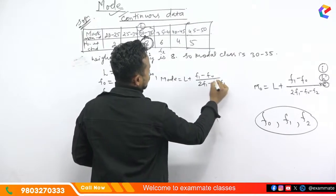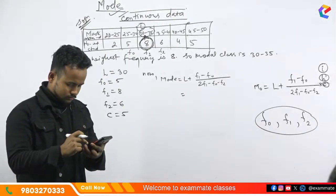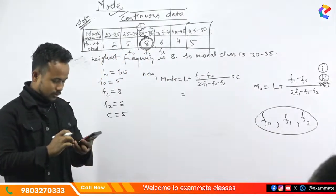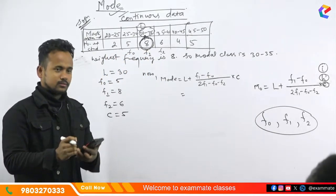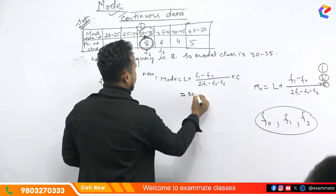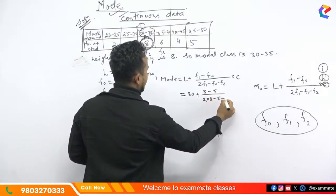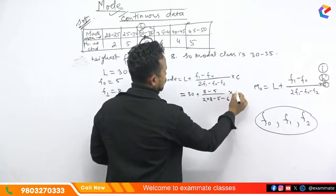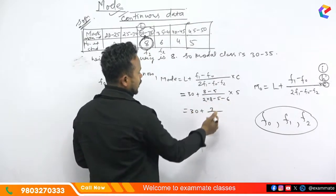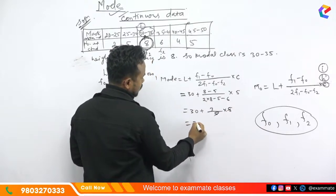Common difference — what is it? Minus 2. If you have to write the answer: H is 0, C is this. 33. Right answer. L is 30. F1 value is 8. 5. 2 into 8 minus 6, into 5. Now 30 plus 3. 11 minus 11 is 11 minus 11 is 5, into 5. Cancel. 3.